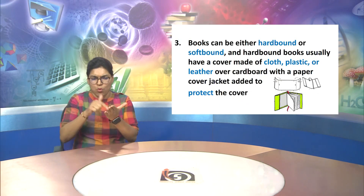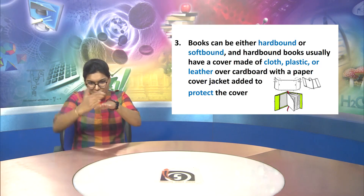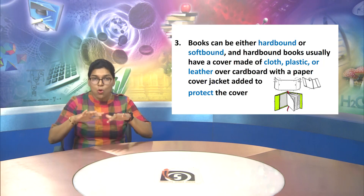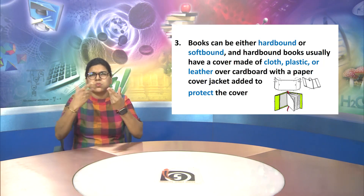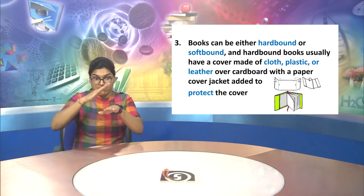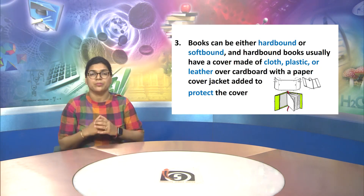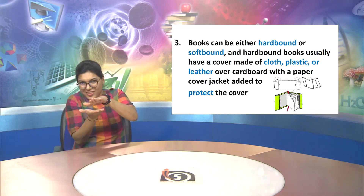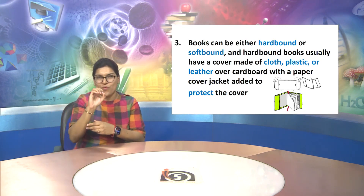Point 3: Books can be either hard bound or soft bound. Hard bound books usually have a cover made of cloth, plastic or leather over cardboard, with a paper cover jacket added to protect the cover.